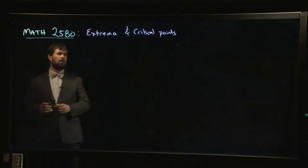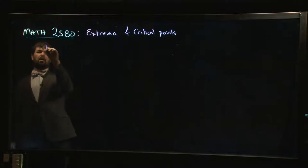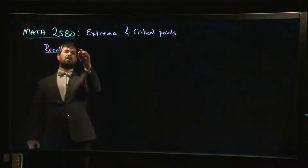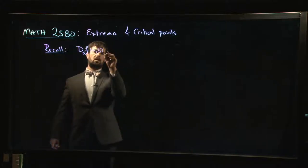The first thing I want to start with is just a quick reminder from the last video. We were talking about directional derivatives. We said that the derivative of f in the direction of some vector u at a point (a,b) is just the gradient of f at (a,b) dotted with u.